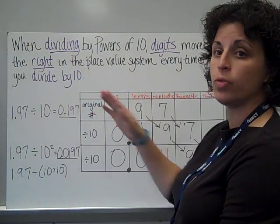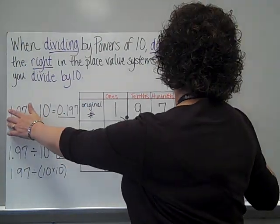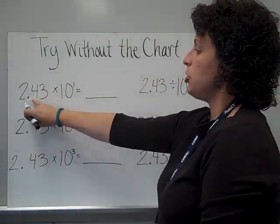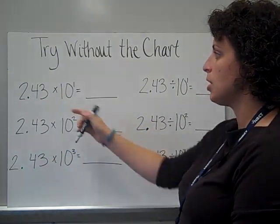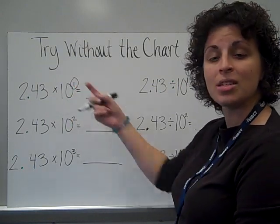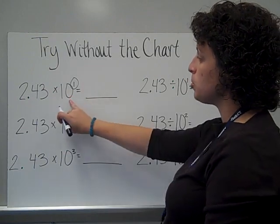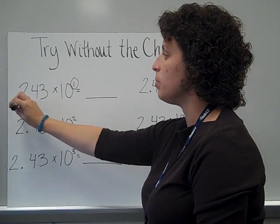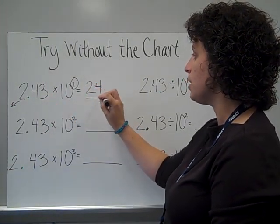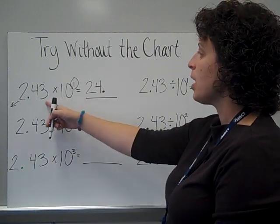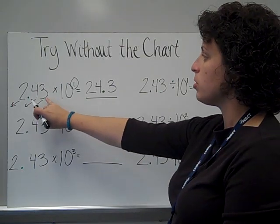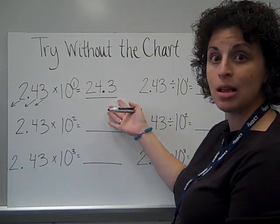Every time we divide by 10, our digits are moving to the right, to a smaller place value. Let's try this without the chart. 2 and 43 hundredths times 10 to the first. Multiplying — my answer should be getting larger. The exponent tells me how many times I'm multiplying by a ten, so it's telling me how many place values my digits need to move. Multiplying by one ten, this 2 is going to move to the tens place, the 4 would come to the ones place, and the 3 moves to the tenths place. So my product is 24 and 3 tenths.